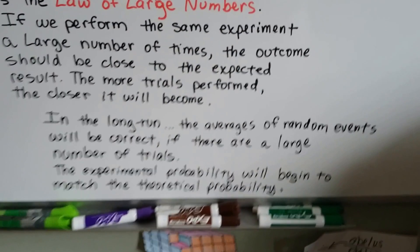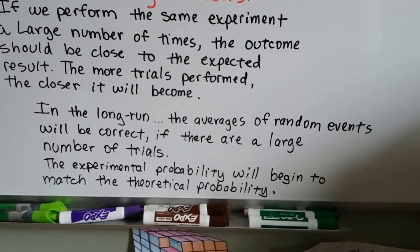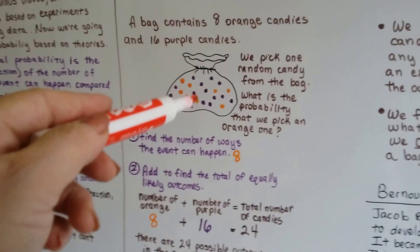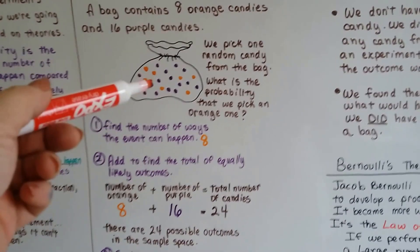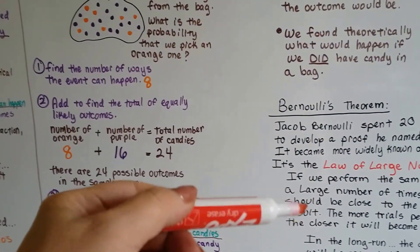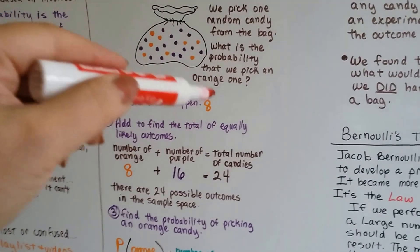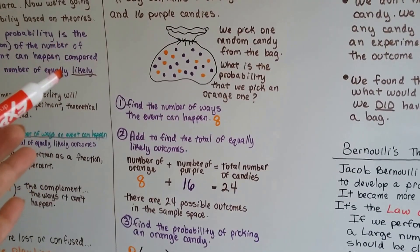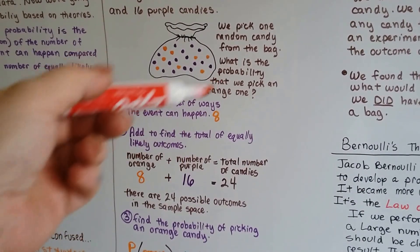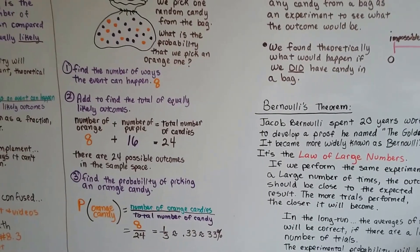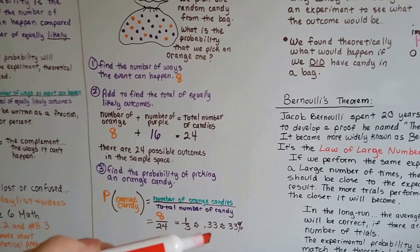In the long run, the averages of random events will be correct. And if there's a large number of trials, the experimental probability will begin to match the theoretical probability. What this is saying is, our theoretical probability, because we don't have a bag of candy, we're just guessing, theoretically, what will happen. If I did get a bag of candy, and we did a lot of trials, like a large number, like 500 or 1,000, it would end up becoming one-third of the time we would get eight candies. If we did it actually, and we tried doing it 10 times, we might not get eight candies. We may not get it a third of the time. But according to Bernoulli's theorem, if we did it like 500 or 1,000 times, it would end up coming out to be a third.